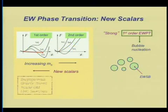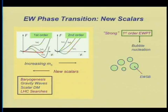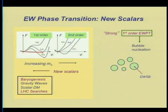If new scalars are there, they might give us baryogenesis. They'll have implications for new particle searches at the LHC, and there are other interesting possible implications including gravitational radiation and connections to dark matter, though I won't have time to discuss those possibilities.